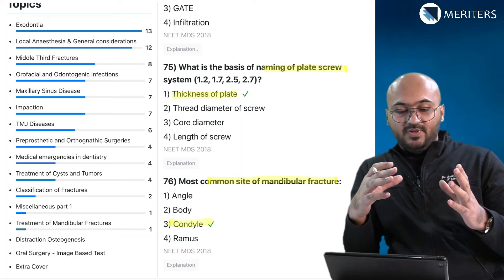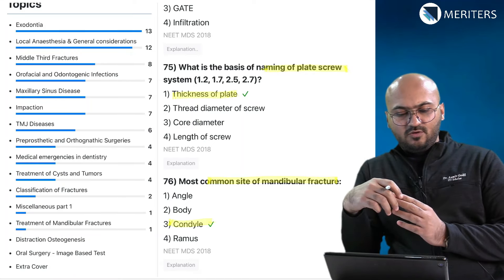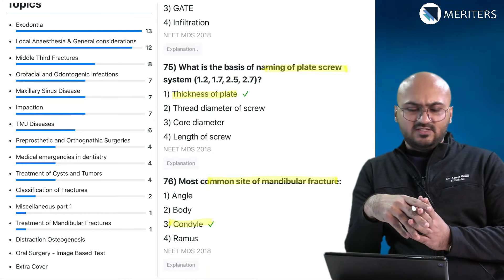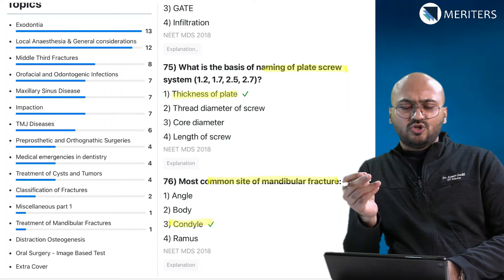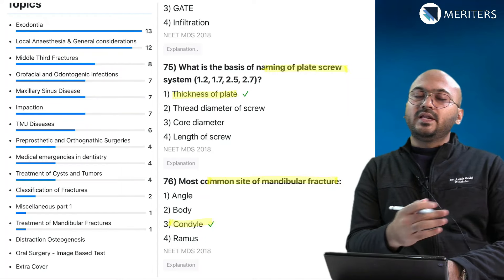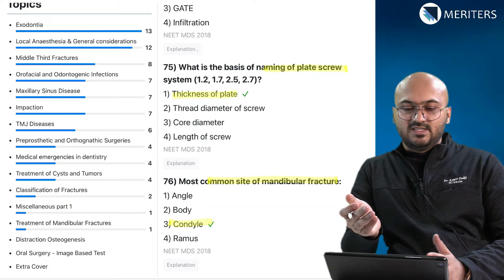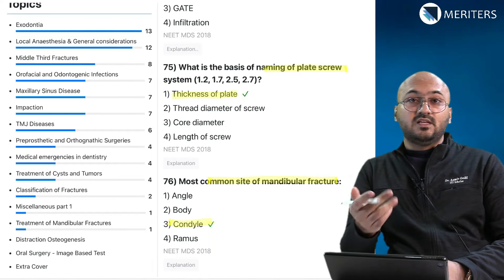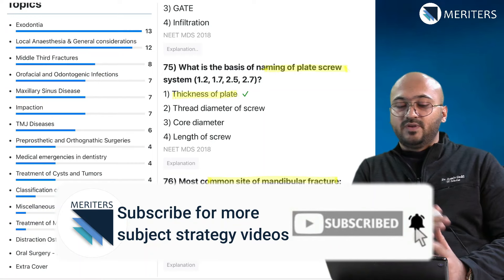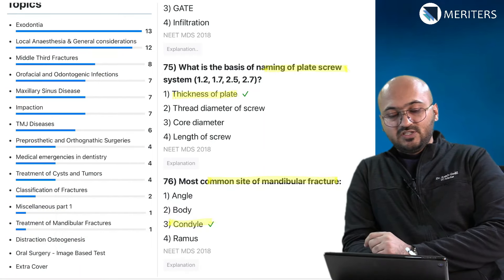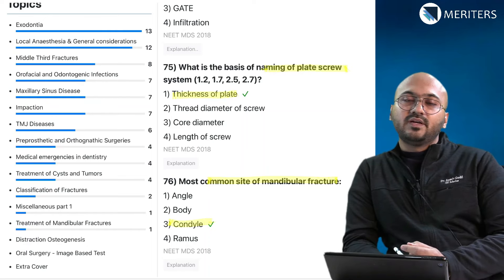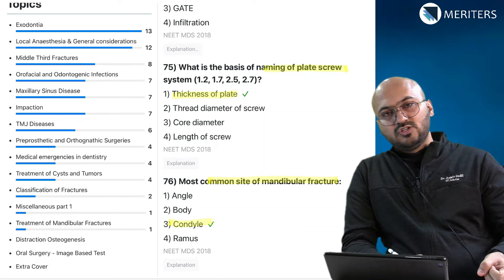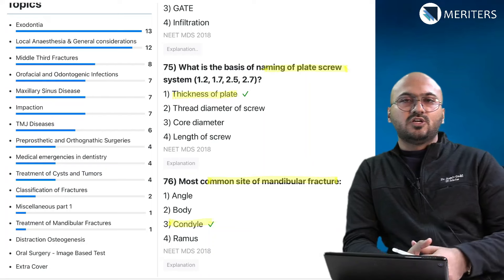Your second priority should be middle third fractures, condylar fractures, sinus, and odontogenic infections. Lastly, there are fewer questions from mandibular fractures, cysts and tumors, prosthetics, and orthognathic surgeries — not many questions on BSSO and similar procedures — but that doesn't mean you completely ignore these topics. They can always come up as surprise questions in the next exam, and oral surgery is a subject very prone to surprise questions. Focus equally on medical emergencies — they are very important and repeat across multiple subjects including medicine, surgery, oral pathology, and periodontics.